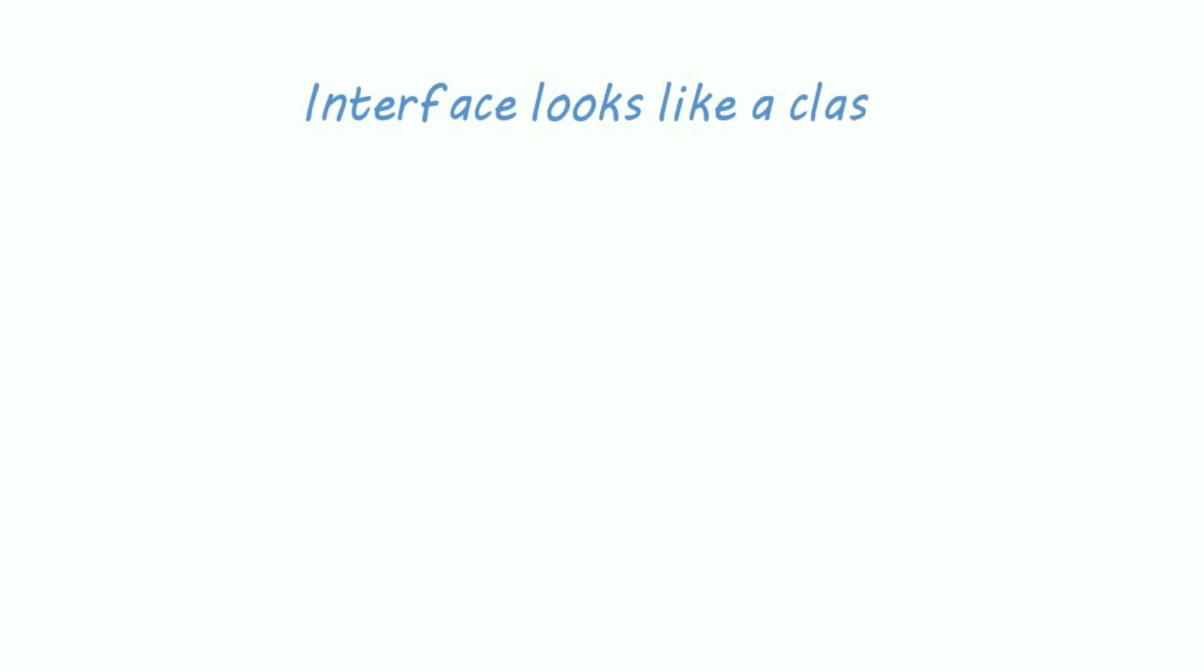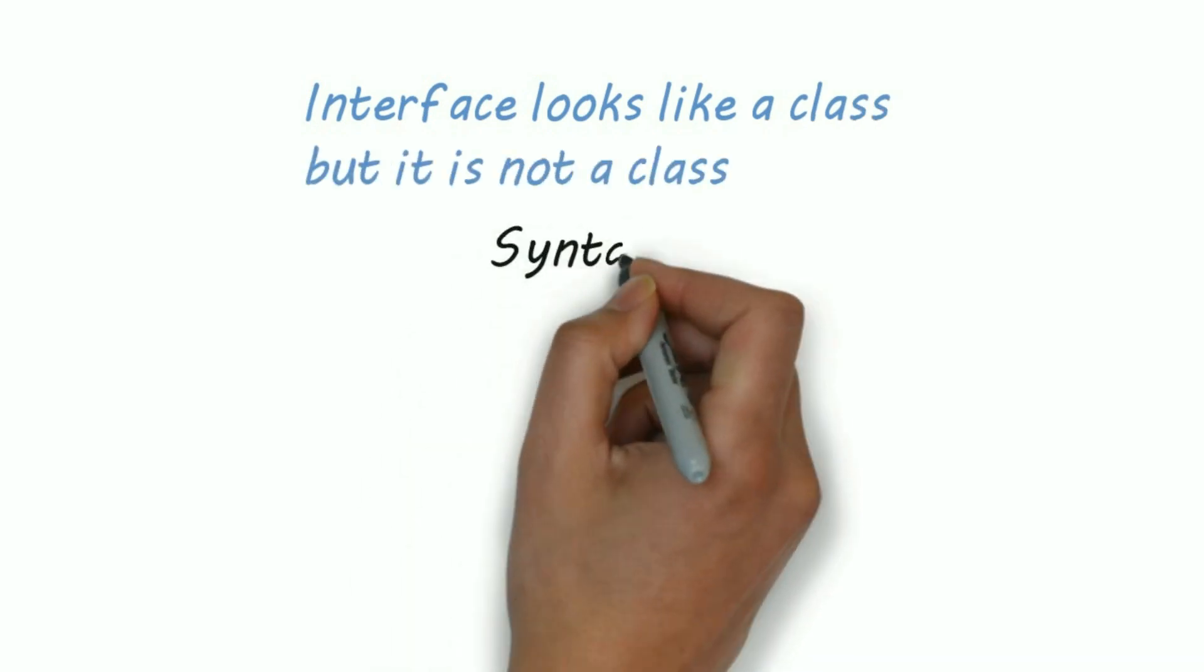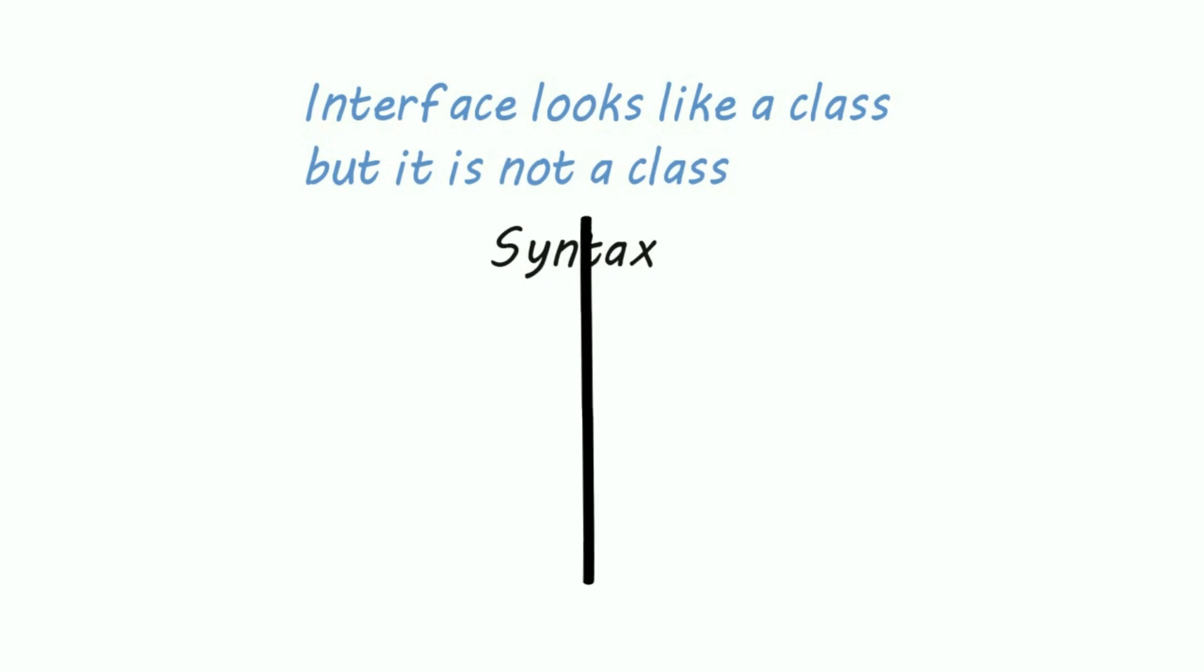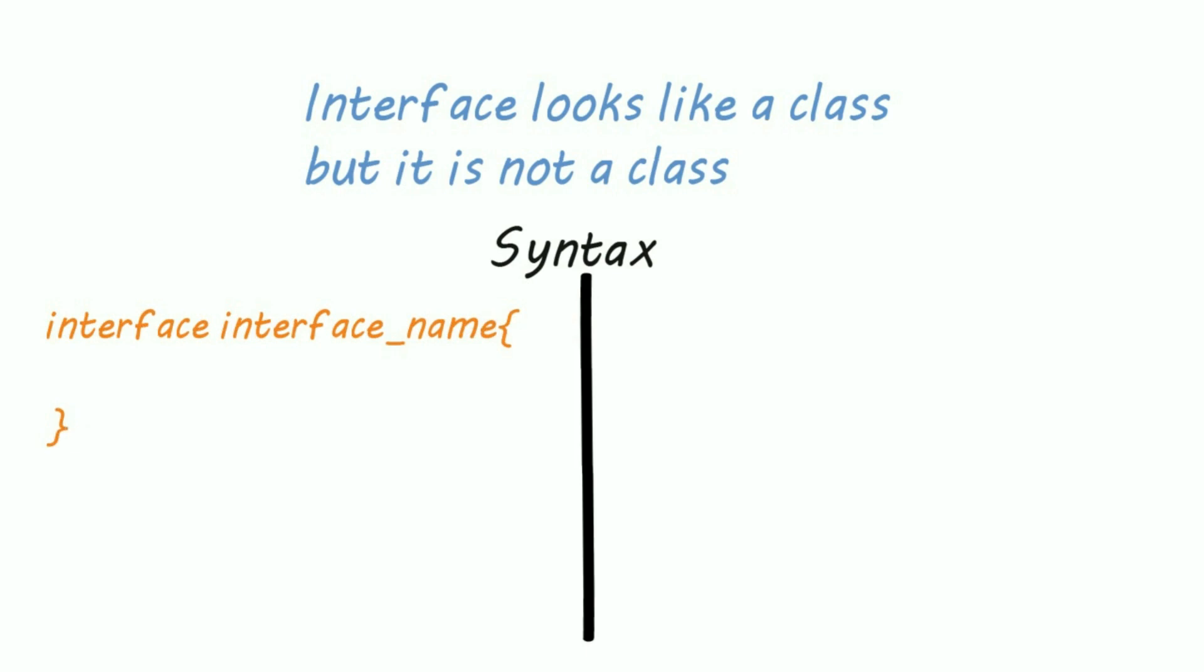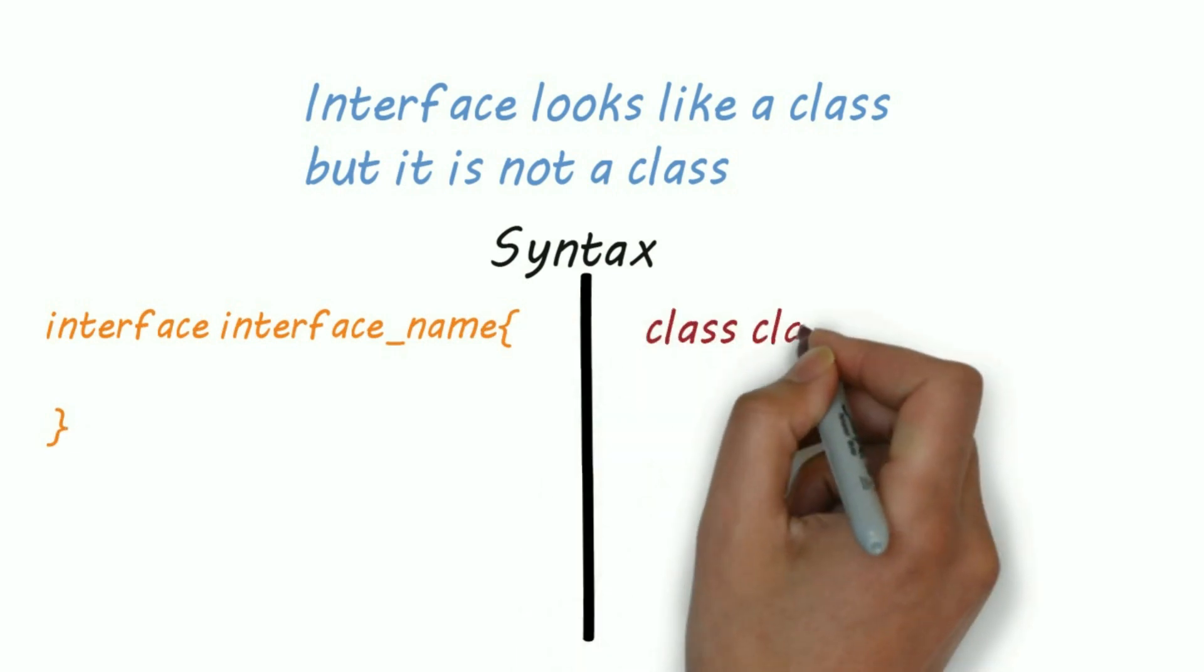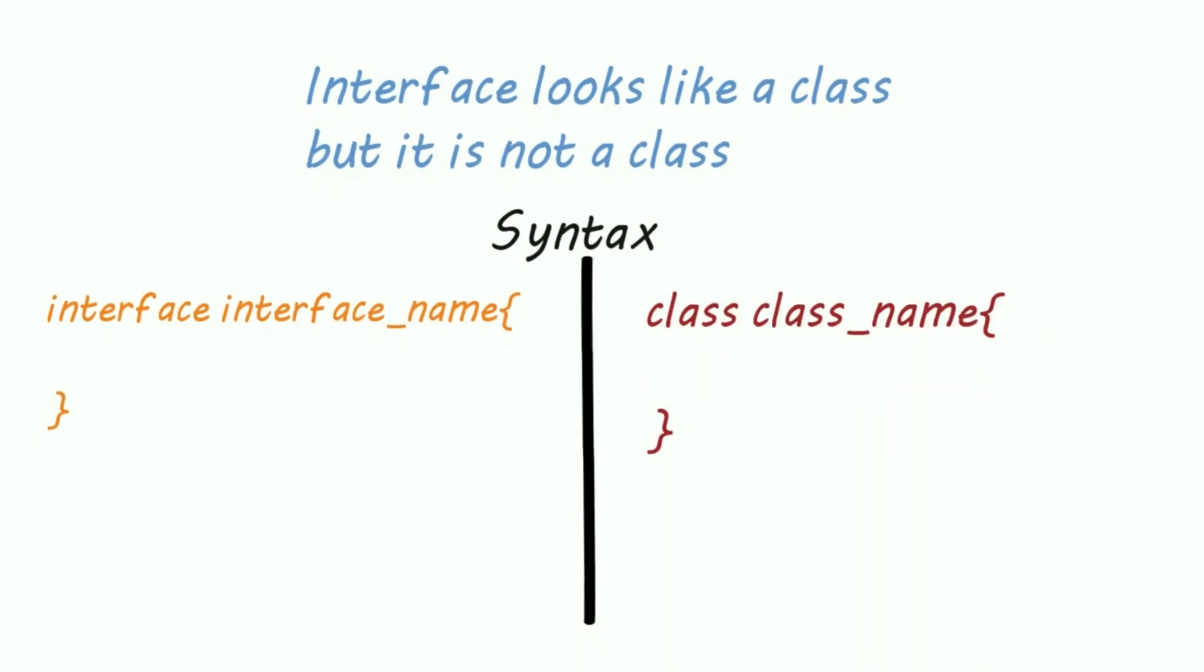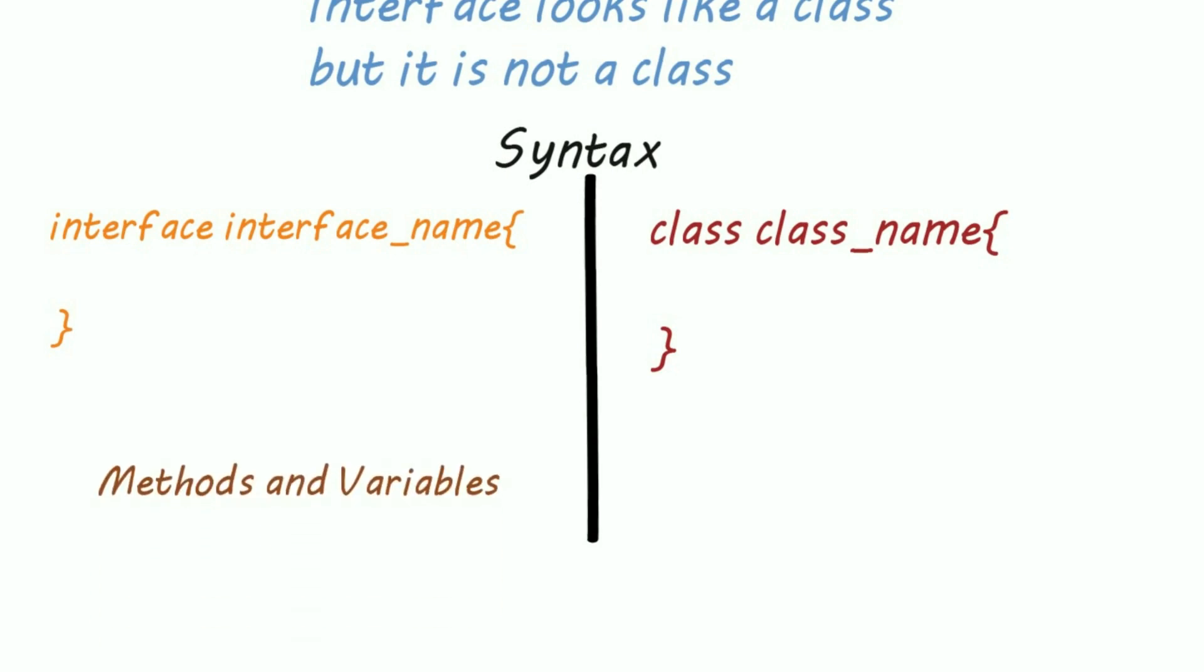Interface looks like a class but it is not a class. Let's see the syntax of an interface. First the keyword interface and then interface name. It is similar to class, that is class and then class name.